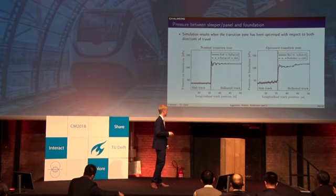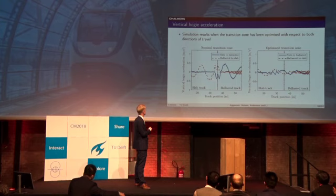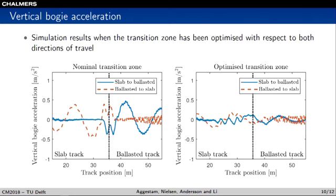A similar figure for vertical bogie acceleration considering both directions of travel shows that for the nominal transition zone the acceleration reaches up to 0.5 m/s², whereas for the optimized transition zone it is reduced to approximately 0.15 m/s².